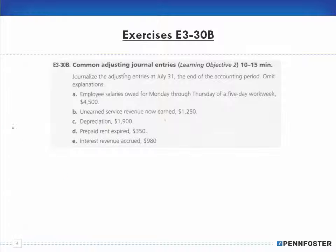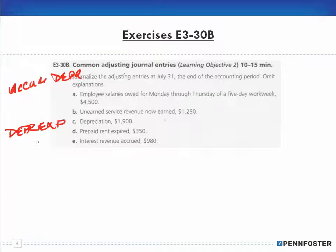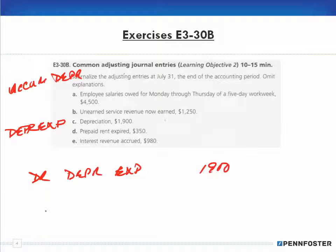For depreciation, we're expensing it. The accounts used are accumulated depreciation and depreciation expense. If depreciation is $1,900, we're expensing it, and since an expense account has a normal debit balance, we debit depreciation expense for $1,900. Debits equal credits, so we credit accumulated depreciation for $1,900.